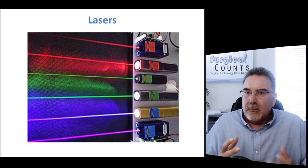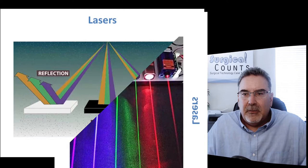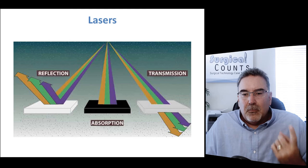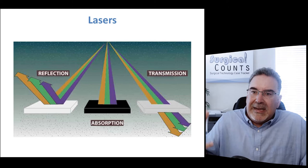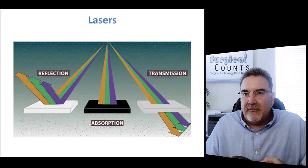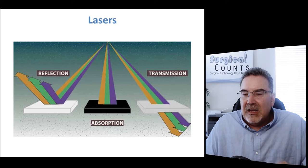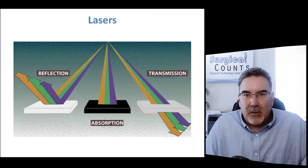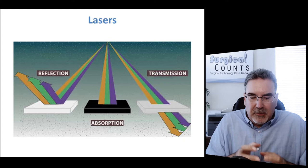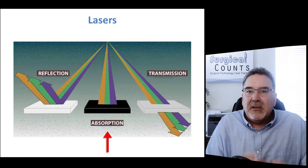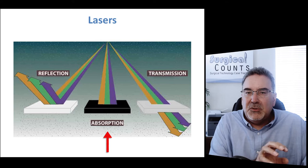Why is color so important? It has to do with the way light interacts with different materials. There are three interactions: reflection, where light bounces off the material like a mirror; absorption, where the light is sucked in and its energy stays in the material; and transmission, where light passes straight through like the material isn't even there. The interaction we care most about for surgical lasers is absorption — when a material absorbs a certain color of light, it gets very hot and either vaporizes or cauterizes.